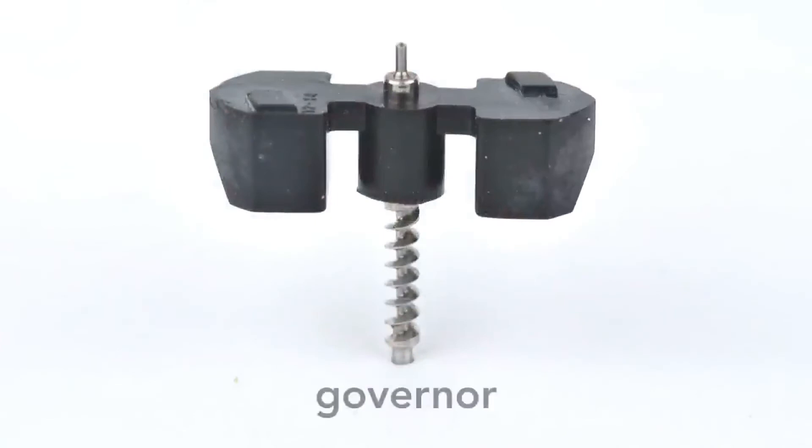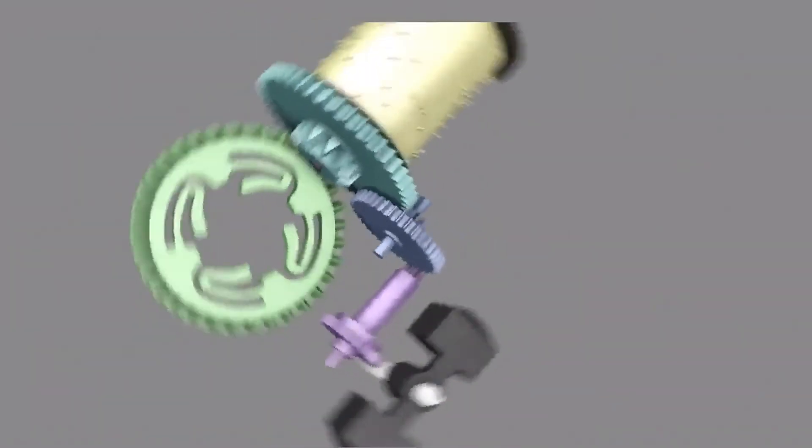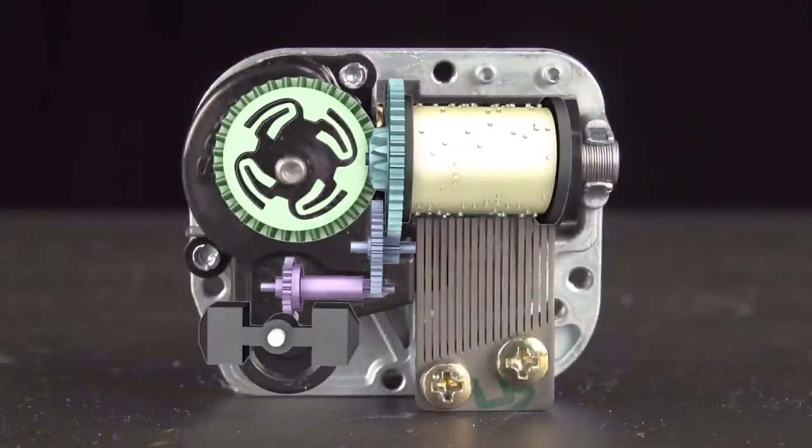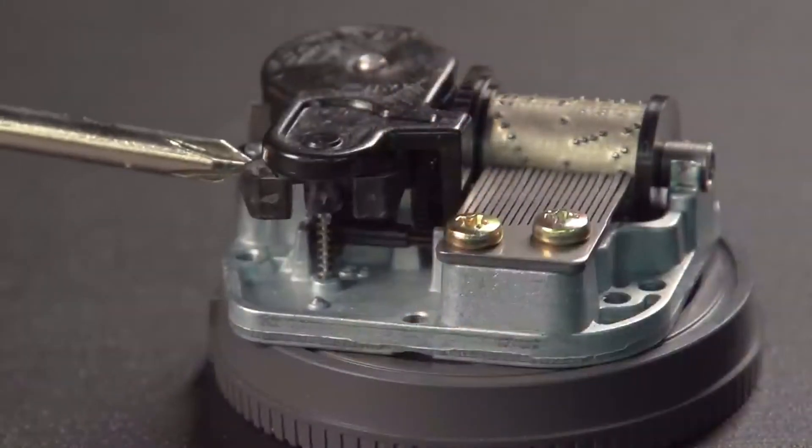This piece, called the Governor, solves this problem. It's connected to the drum by a gear train. The gear train is compactly built into the music box. The rotation of the governor controls the speed. Stop the governor and the drum stops.